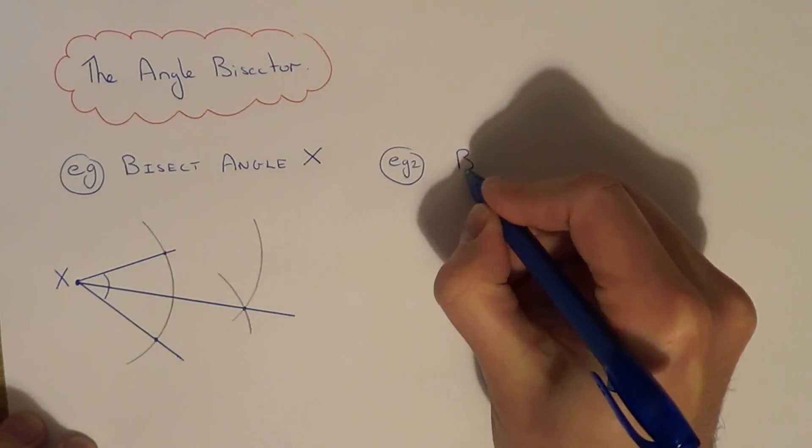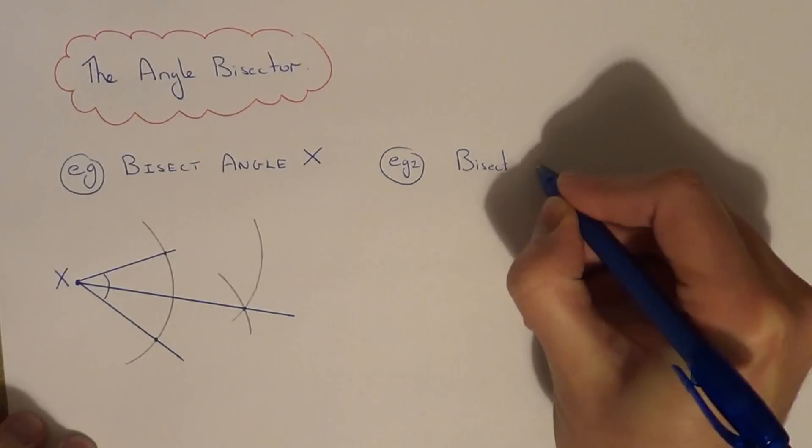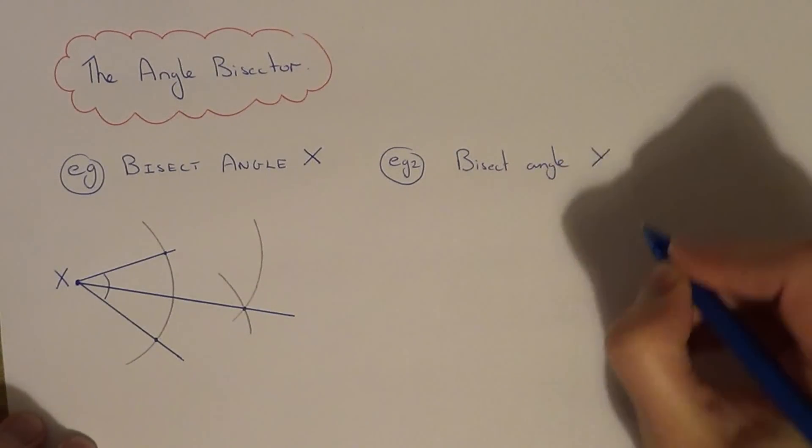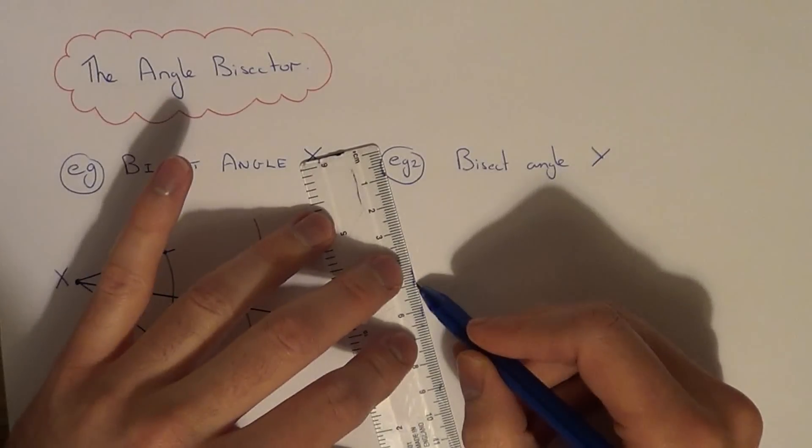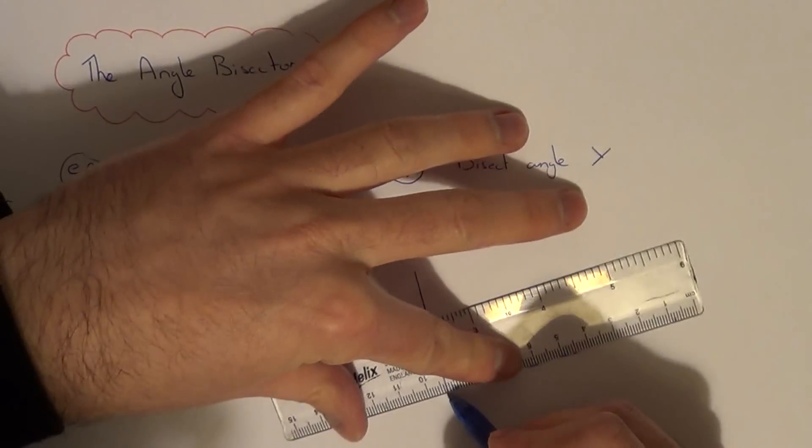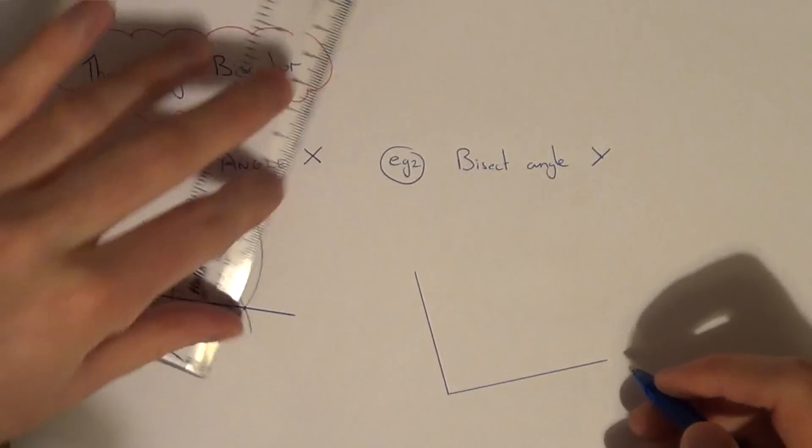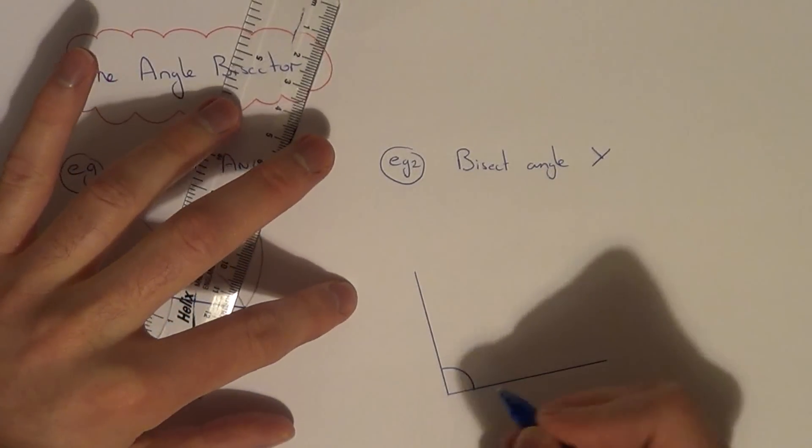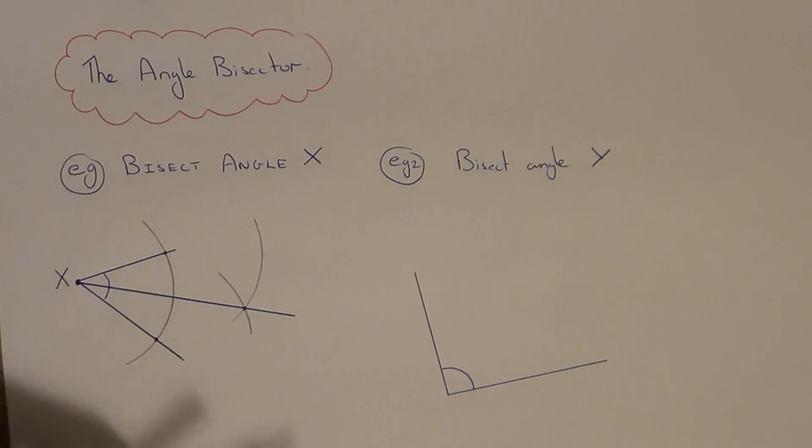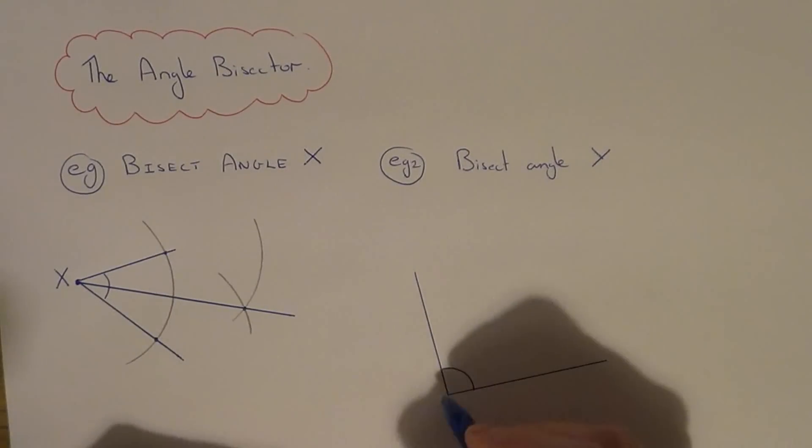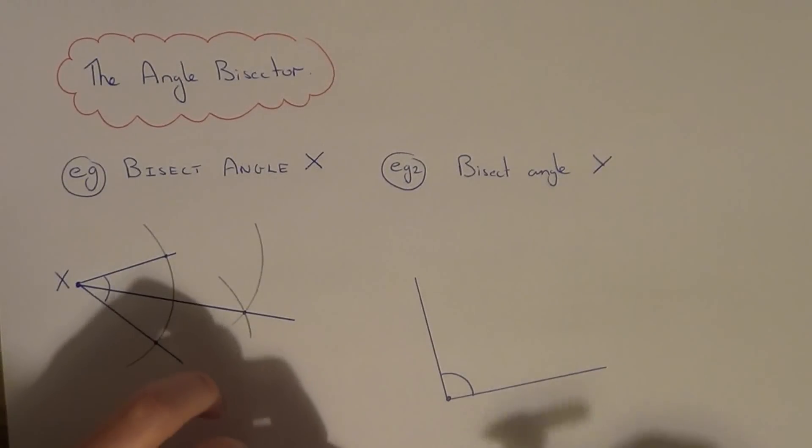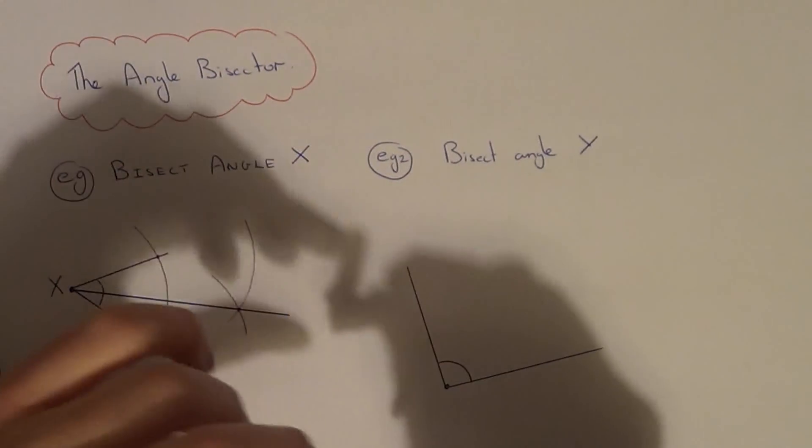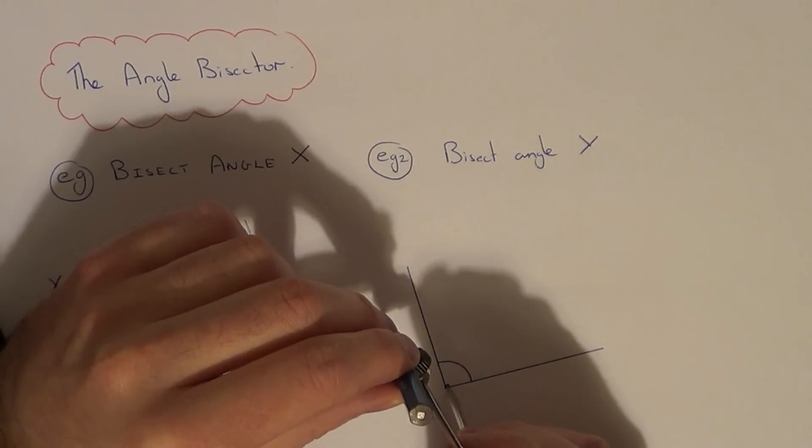So bisect angle Y. So again, if you get your compass and put your compass on the centre of the angle, and do an arc passing across your two lines which make the angle.